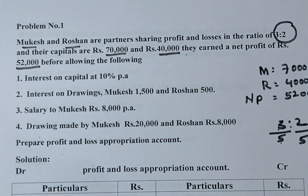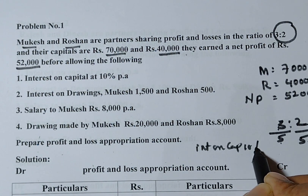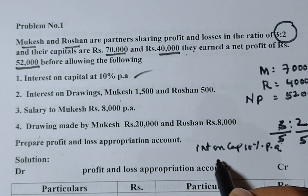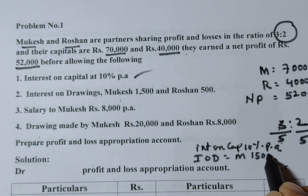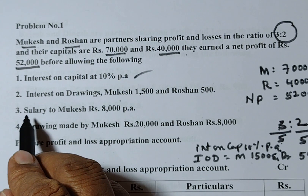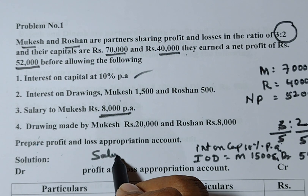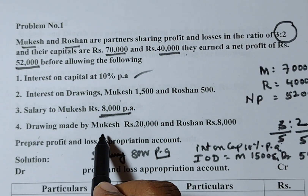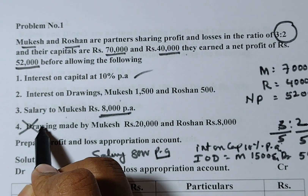The given conditions are: Interest on capital at 10% per annum. Interest on drawings — Mukesh rupees 1,500 and Roshan rupees 500. Salary to Mukesh is rupees 8,000 per annum — per annum means for one full year. Drawings made by Mukesh are rupees 20,000 and Roshan rupees 8,000; however, drawings will not appear anywhere in the appropriation account.